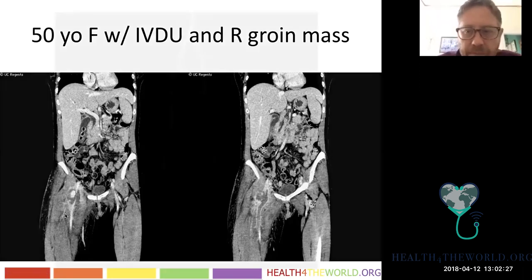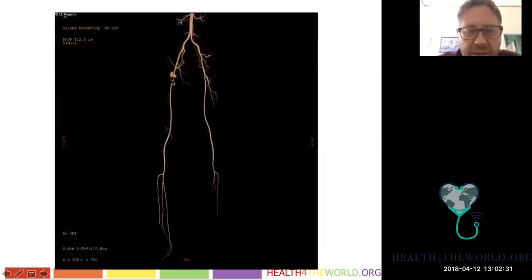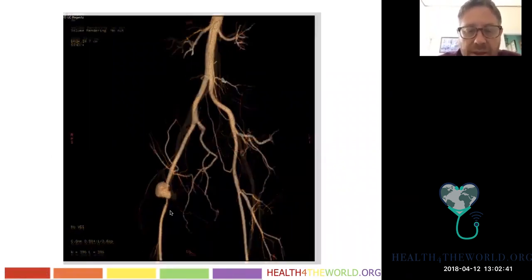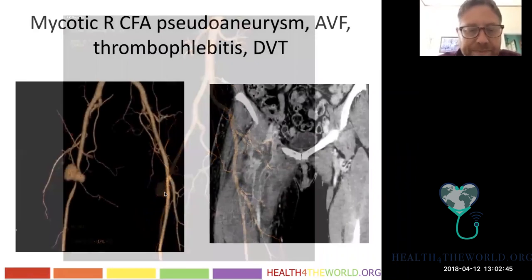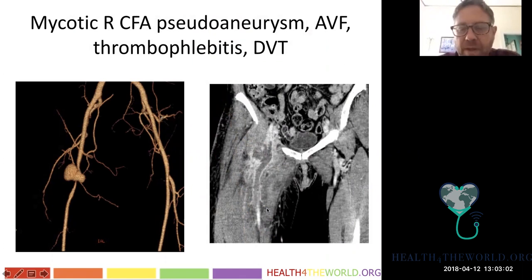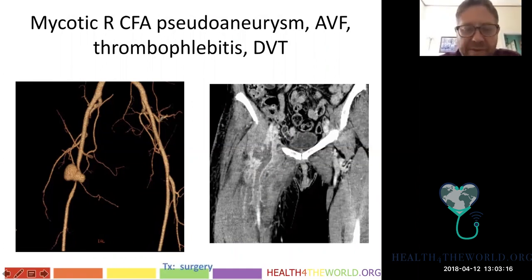On volume-rendered CTA you can see a pseudo-aneurysm with compression of the right femoral artery. This is a mycotic pseudo-aneurysm with an AV fistula — there's a connection between the pseudo-aneurysm and the vein — along with thrombophlebitis and DVT. There's edema and inflammation around the area. It's rare to see all of these together, but here we do.